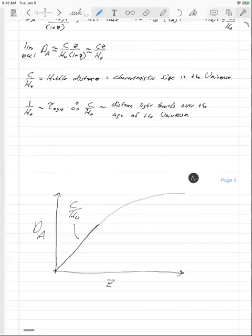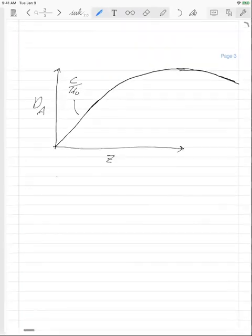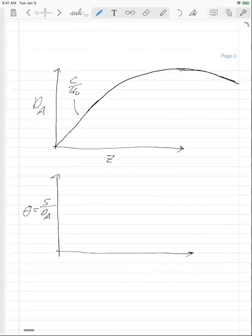And then there's actually a maximum and it starts to go back down like this. And so when you plug this into your formula for what the object looks like, right, we're plotting theta, which is once again S over D A. If D A were just proportional to Z as it is in the low Z limit, then you would get something like this, where this is proportional to one over Z.